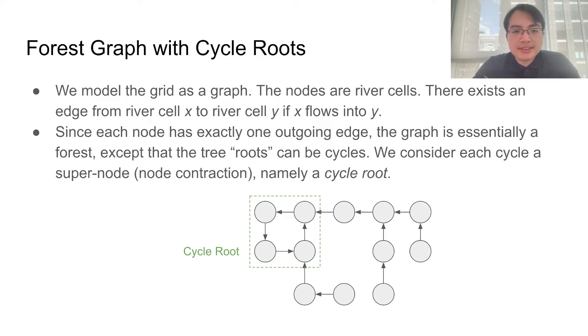Because each node has exactly one outgoing edge here, the graph is essentially a forest, with an exception that the tree roots can sometimes be cycles. We will consider each cycle a super node. This is also sometimes called node contraction.